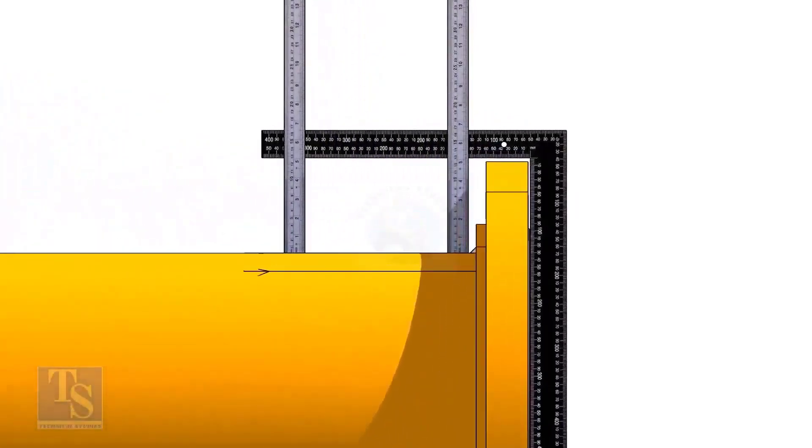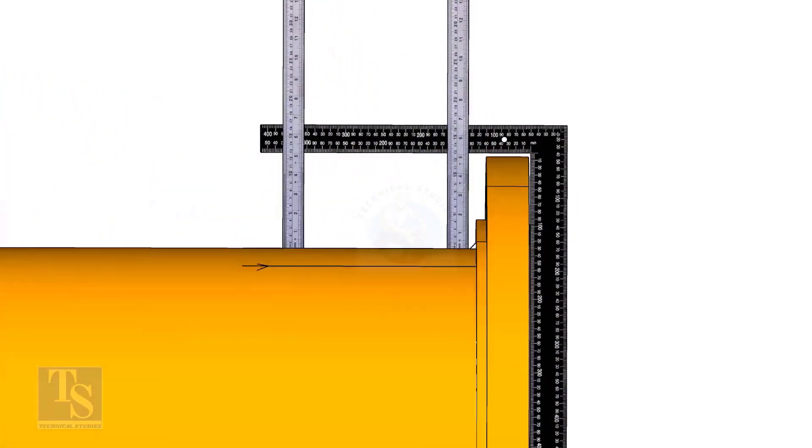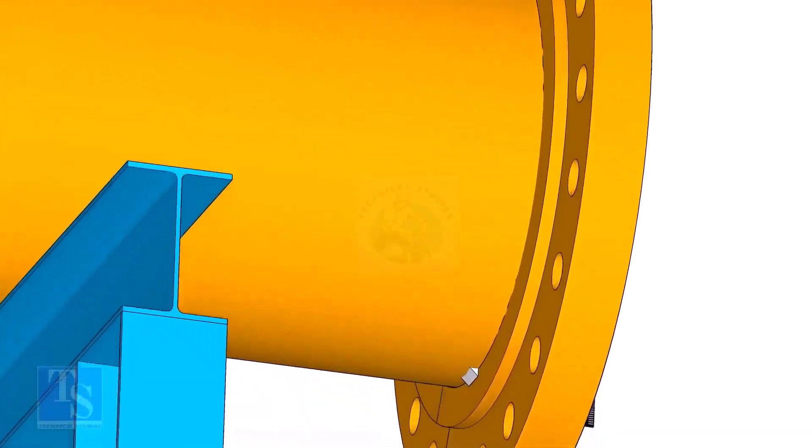Tack weld on the top of the pipe with the flange and check the squareness. If correct, tack weld at the bottom side also.